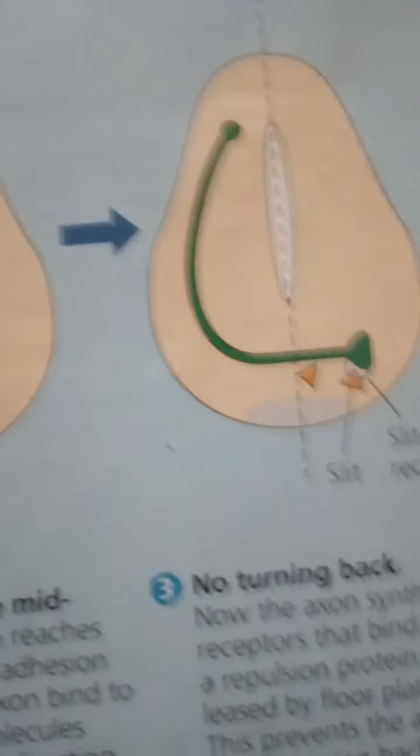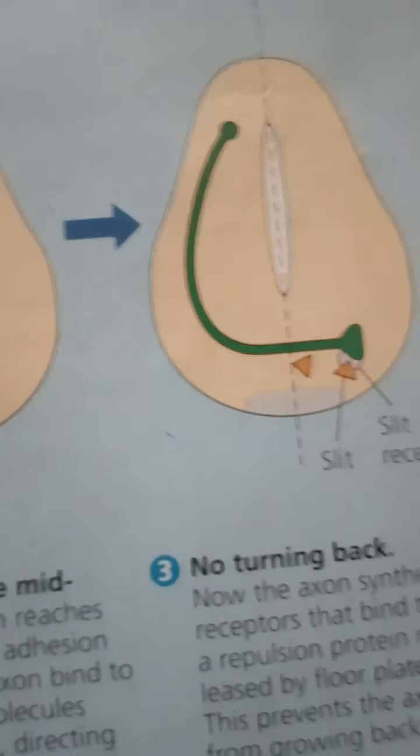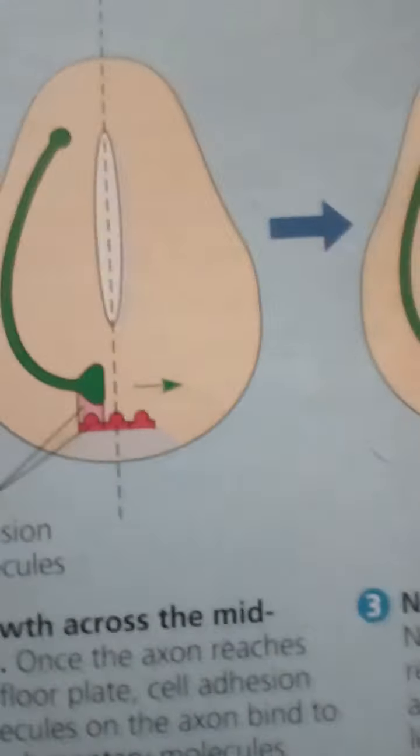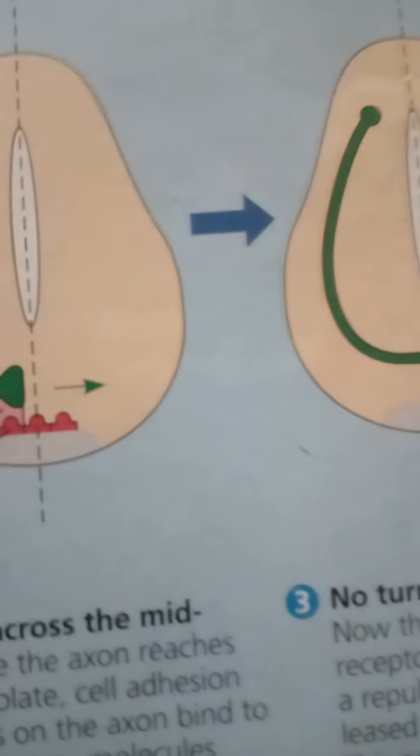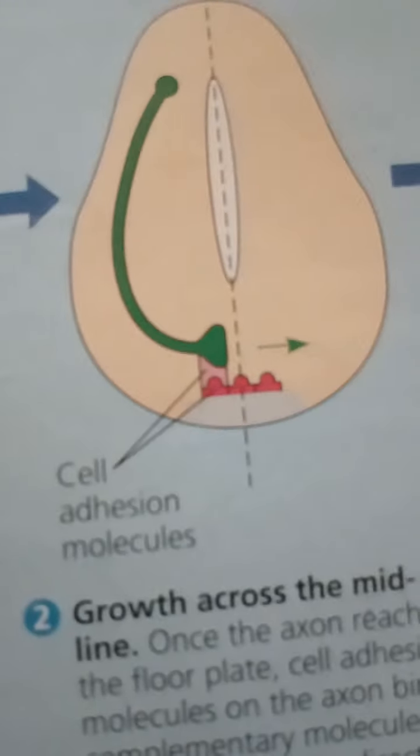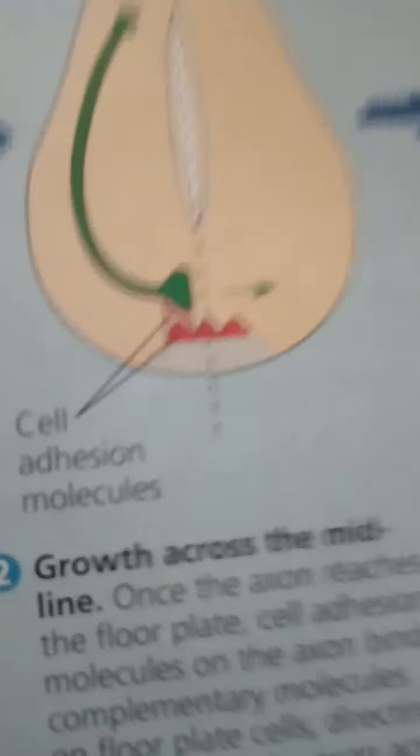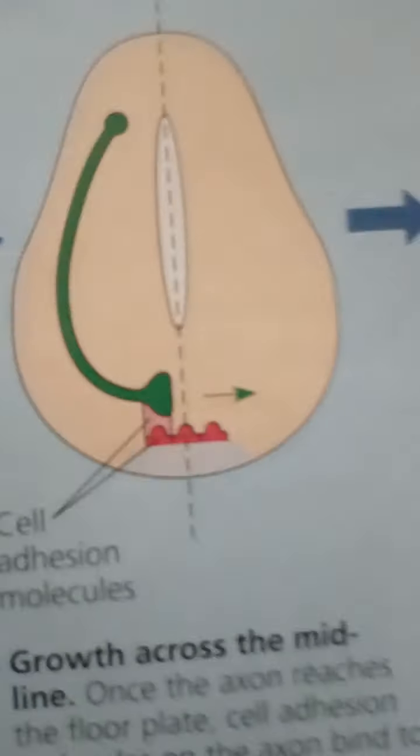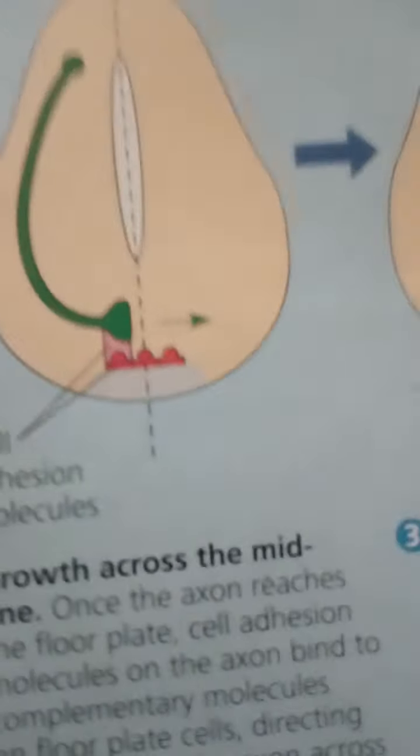Cell adhesion molecules on the axon's growth cone also play a role. They attach to complementary molecules on surrounding cells that provide tracks for the growing axon to follow. Nerve growth factor released by astrocytes and growth-promoting proteins produced by neurons themselves contribute to the process by stimulating axonal elongation.